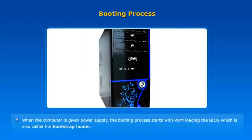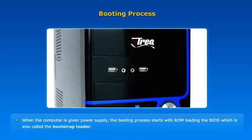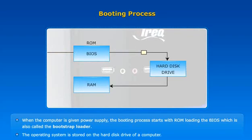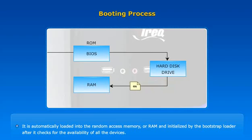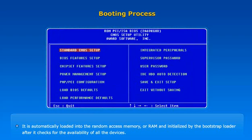Loading of an operating system is called the booting process. When the computer is given a power supply, the booting process starts with the ROM loading the BIOS, also called the bootstrap loader. The operating system is stored on the hard disk drive and is automatically loaded into RAM and initialized by the bootstrap loader after it checks for the availability of all the devices.